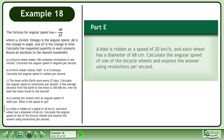In Part E, a bike is ridden at a speed of 20 kilometers per hour, and each wheel has a diameter of 68 centimeters. Calculate the angular speed of one of the bicycle wheels and express the answer in revolutions per second.